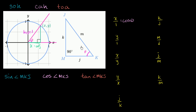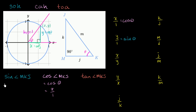Theta is the same thing as angle mkj, so cosine of angle mkj equals cosine of theta, which equals x over 1. Now let's move to y over 1. Y is going to be this length — relative to angle theta, that is the opposite side. Which trig function is opposite over hypotenuse? That's sine of theta. So sine of angle mkj is the same thing as sine of theta, and that's the same thing as y over 1.